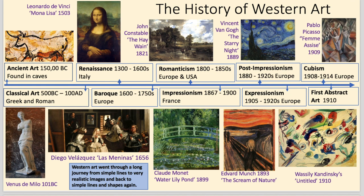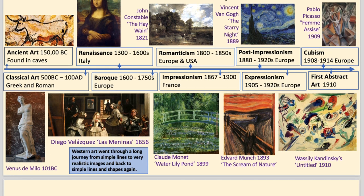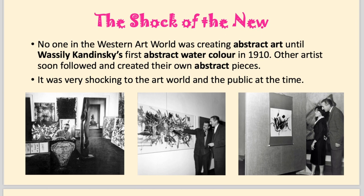Picasso took that even further and created Cubism, which began looking at the geometric shapes within nature and at all sides of an object at the same time. That led on to the first abstract art and people like Kandinsky, who were trying to find something pure in art — not worrying about representing what we see, but more how we feel: pure line, colour and shape, somehow creating a spiritual experience. This was very shocking; no one in the Western world was creating abstract art until Kandinsky, and the public were hugely outraged.